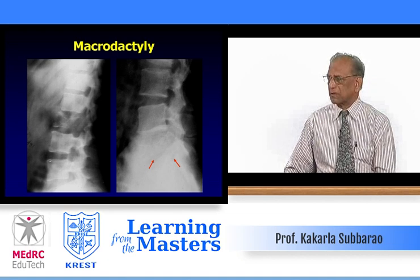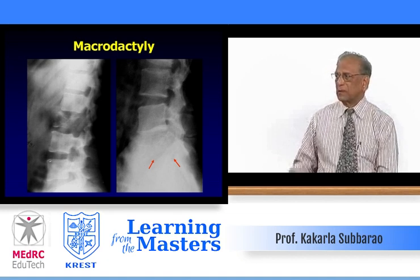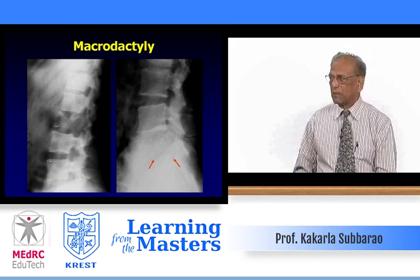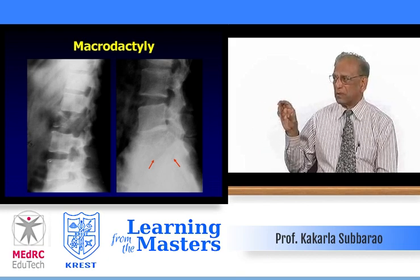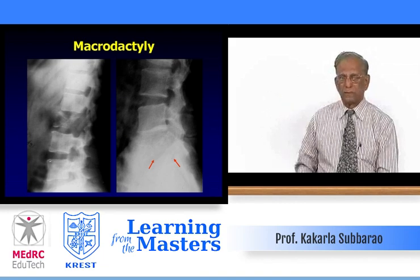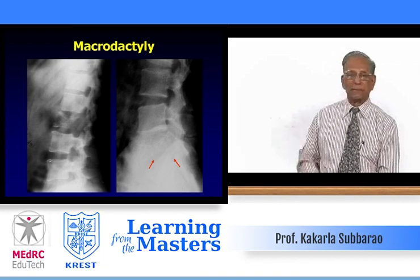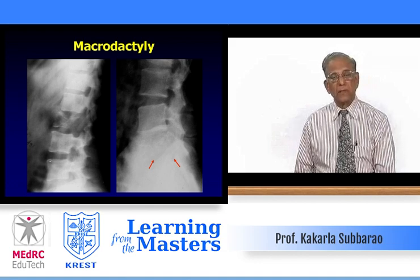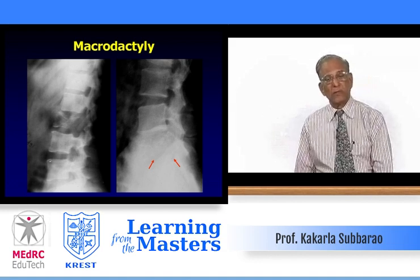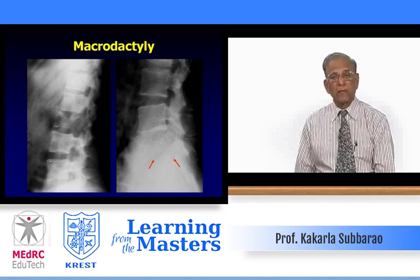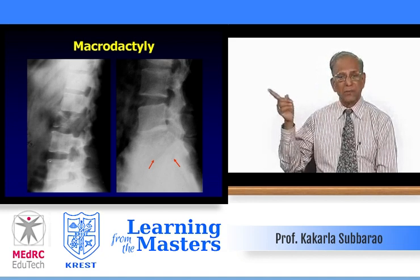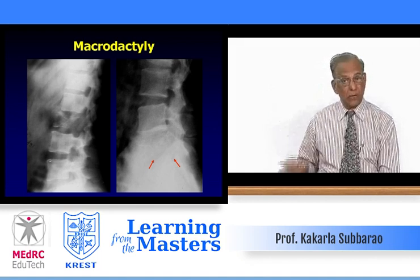Two vertebral lesions — only lateral views are given. On the left side, an adult with a lytic lesion: the L2 vertebra is completely collapsed with the lytic lesion expanding. For diagonal lesions in a patient above 50 years, you think of plasmacytoma or even metastasis. You do not think of tuberculosis because the intervertebral spaces are well preserved.